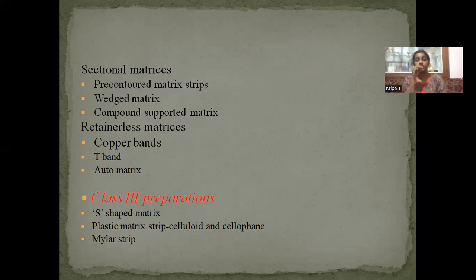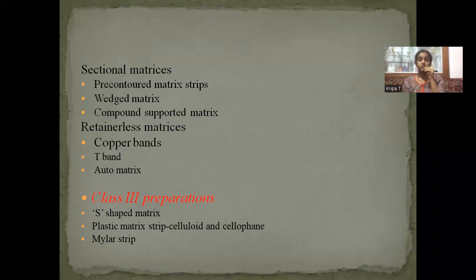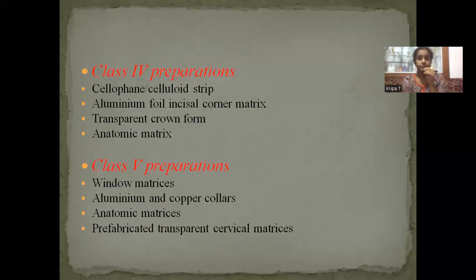For class 3, you use an S-shaped matrix, plastic matrix strip which is celluloid and cellophane, and mylar strip. For class 4: cellophane or celluloid strip, aluminium foil, aluminium foil incisal corner matrix (which cannot be used for tooth-coloured), transparent crown form and anatomic matrix. For class 5: window matrix, aluminium and copper collar, anatomic matrix, prefabricated transparent cervical matrix.